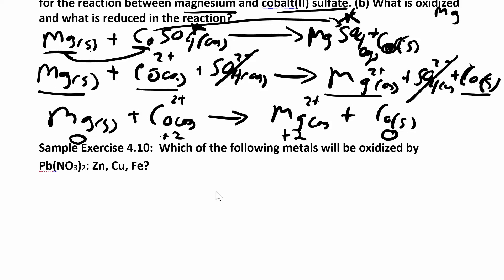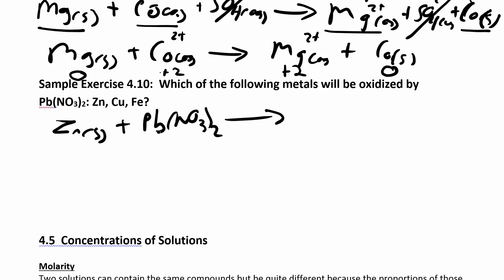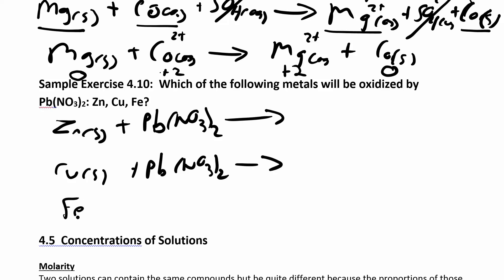The next problem is a little different. It asks: which of the following metals will be oxidized by lead(II) nitrate? You want to look at three possible reactions and compare the reactivity of each element to lead. Will zinc solid react with lead(II) nitrate? Will copper? Will iron? Zinc will only replace lead if the solid zinc is above the lead ions in the activity table.